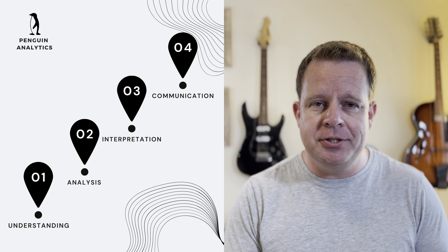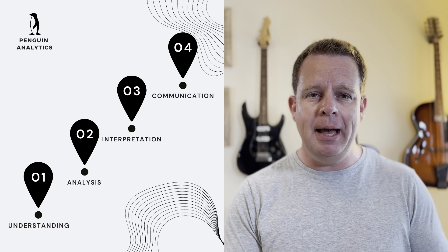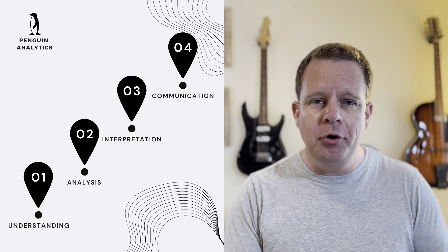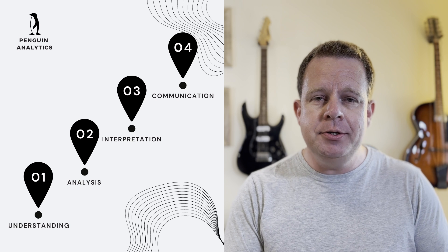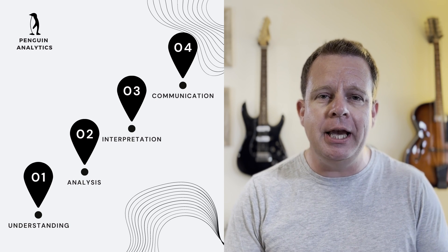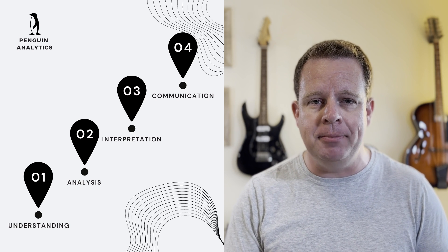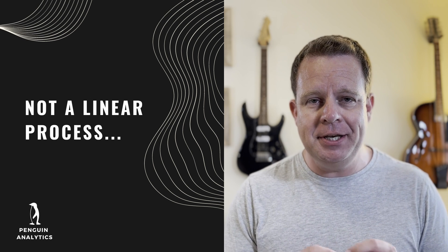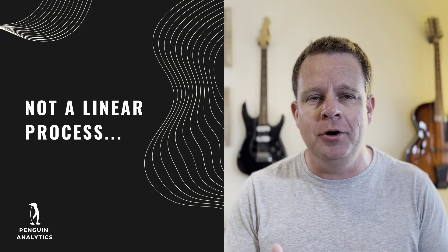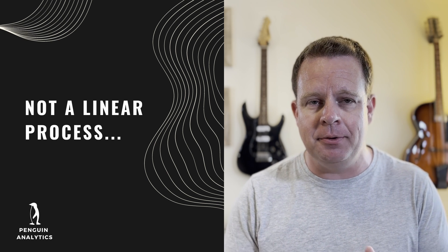The third level is interpretation — once you've identified the most important numbers, what do they tell you about what's happening in the real world? The fourth level is communication — can you take all of your interpretation and put it together in a way that makes sense, is fair and balanced, and tells the story of what's actually happening behind the scenes? These skills are not linear; you don't have to develop a deep understanding before moving on to analysis, or be an expert analyst before interpreting and communicating.